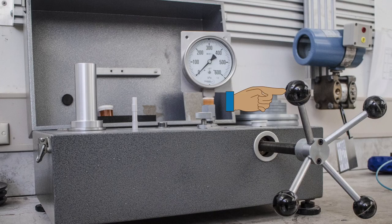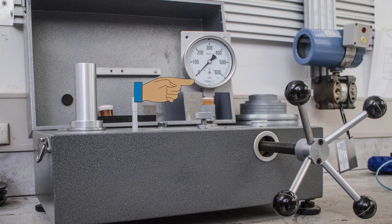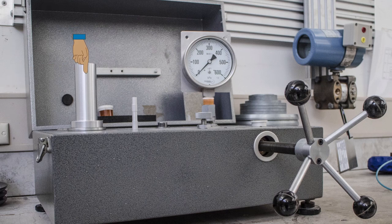The dead weight tester consists of a hand pump, which creates an applied pressure to the tested instrument as well as to a piston. The piston has mass that is under the effect of gravity.